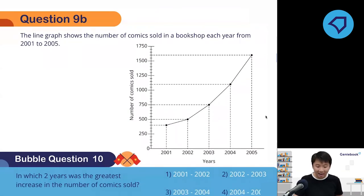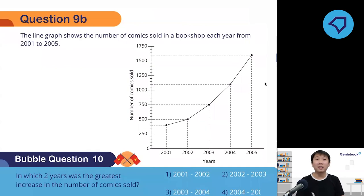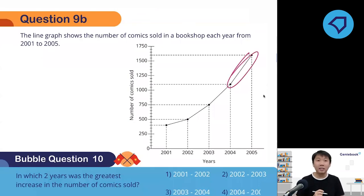Last question for the night: which two years was there the greatest increase? Look for the steepest upward slope — there is no need for any calculation. Looking at the graph, the steepest slope is clearly from 2004 to 2005. So the answer is option number four: 2004 to 2005.